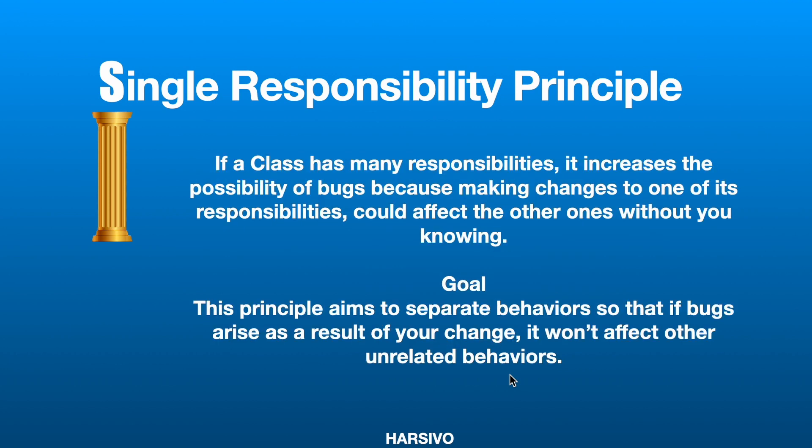Now let's talk about why we need the Single Responsibility Principle. If your class is responsible for multiple things and you edit one part of it, it can affect other code as well. For example, editing code responsible for storing data into the database can affect some other functionality written in the same class. If a class has multiple responsibilities, it increases the possibility of bugs.